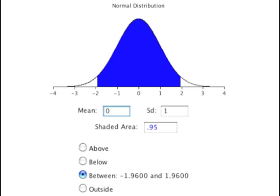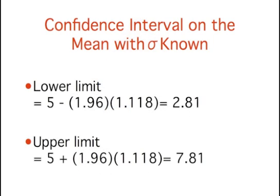If you had wanted to compute the 99% confidence interval, you would have set the shaded area to 0.99, and the result would have been 2.58. The confidence interval can then be computed as shown. The lower limit equals 5 minus 1.96 times 1.118, which equals 2.81. The upper limit equals 5 plus 1.96 times 1.118, which equals 7.81.